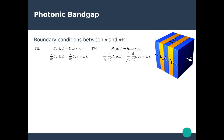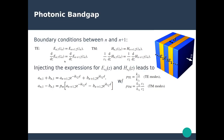Injecting the expressions for the electric and magnetic fields into those boundary conditions gives expressions connecting the a and b coefficients with the a_(n+1) and b_(n+1) coefficients. We have two equations connecting four coefficients: coefficients a and b in layer 1 (material epsilon_1), and a_(n+1), b_(n+1) in material epsilon_2.